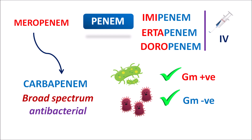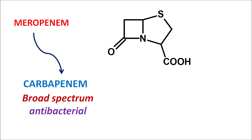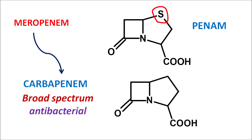Because of structural similarity, meropenem acts just like penicillins but with more stability and a broader spectrum of activity. Penicillins have a ring structure called the penem, where sulfur is included within the heterocyclic ring system. In carbapenems, the structure is modified — sulfur is replaced with carbon, which is why the prefix 'carba' is added to the name.